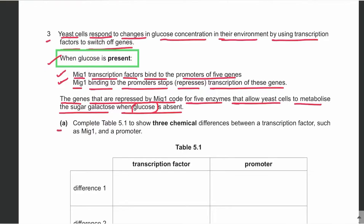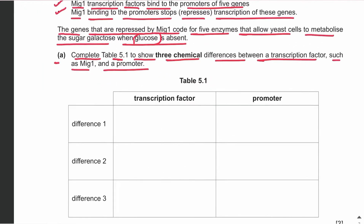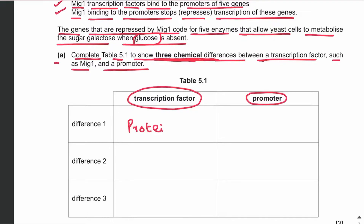Part A: Complete the table to show three chemical differences between a transcription factor such as MIG1 and a promoter. A transcription factor is a protein, whereas a promoter is part of the DNA. We need to state three chemical differences - molecular features. First, transcription factor is a protein, whereas promoter is DNA. Second, transcription factor is made up of amino acids.